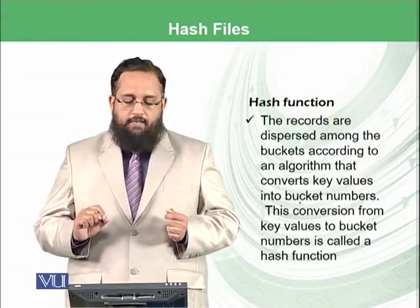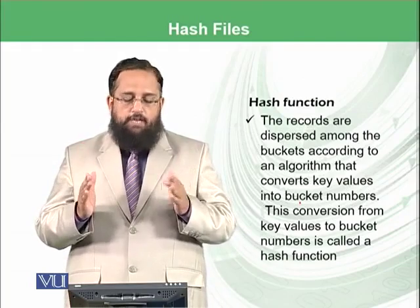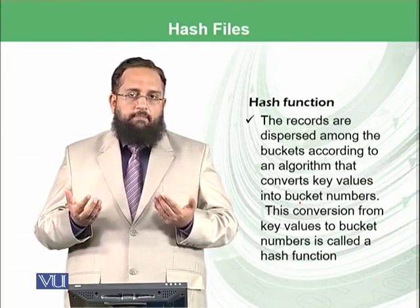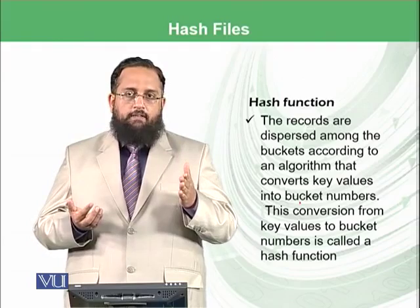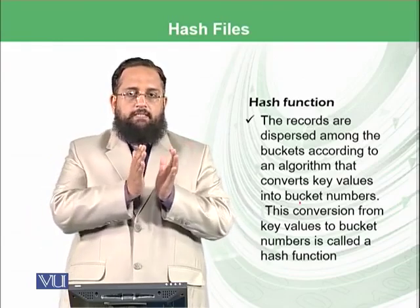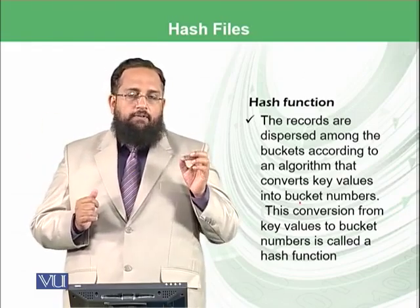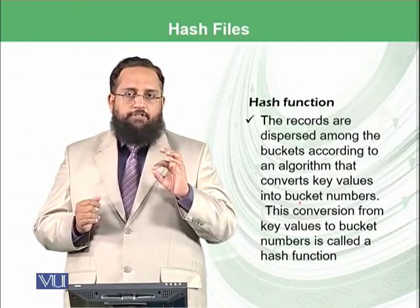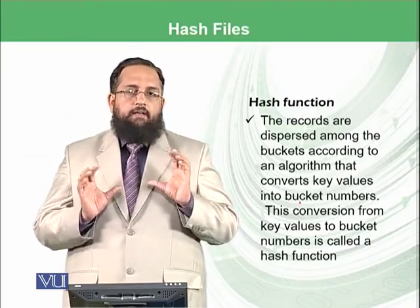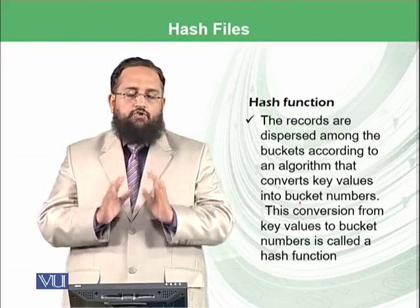So what is a hash function? Records are dispersed among the buckets according to an algorithm that converts key values into bucket numbers. For example, our starting address is 1000 in the drive and our bucket size is 500. So the first bucket is 500, the next bucket is 500, the next bucket is 500. Whatever record we want to store, we will make a hashing function which will identify in which bucket it will be stored, and within that bucket, where space is available, we will store it after the last record stored there.